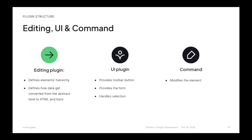The UI plugin provides three things: it creates a toolbar button (the button we click to instantiate our plugin), it creates the form we see when we click that button, and it handles the selection. In the CKEditor 5 context, our plugin should know whether we selected an instance of our plugin or something else, and react accordingly. Lastly, the command modifies the element — it works with the model. I like to think of it as a Drupal form state object: it stores the current state of our plugin, current values, and other properties.